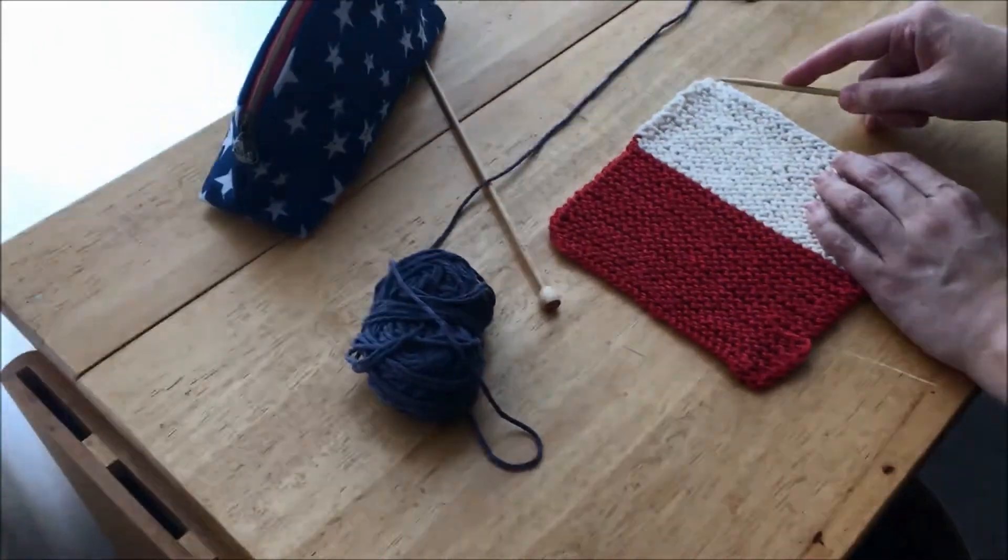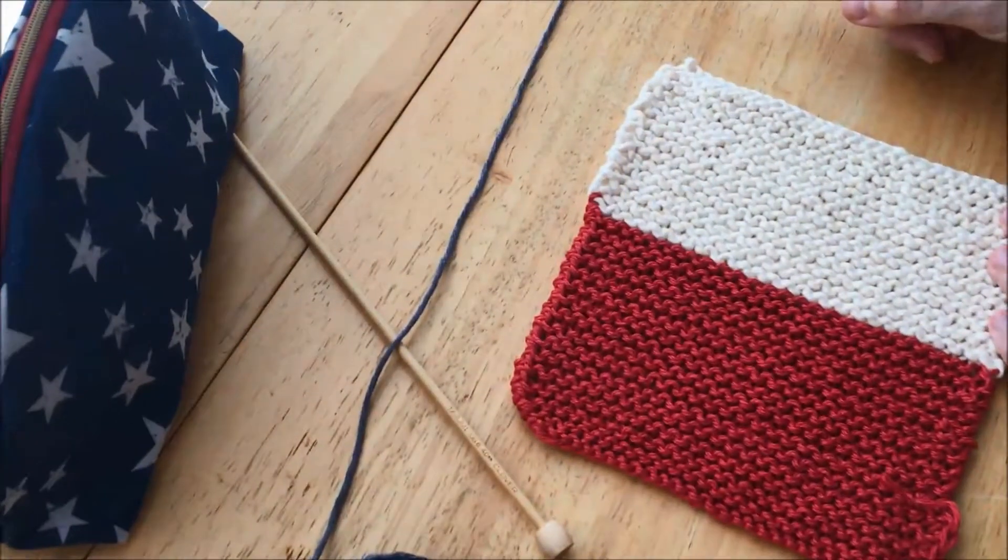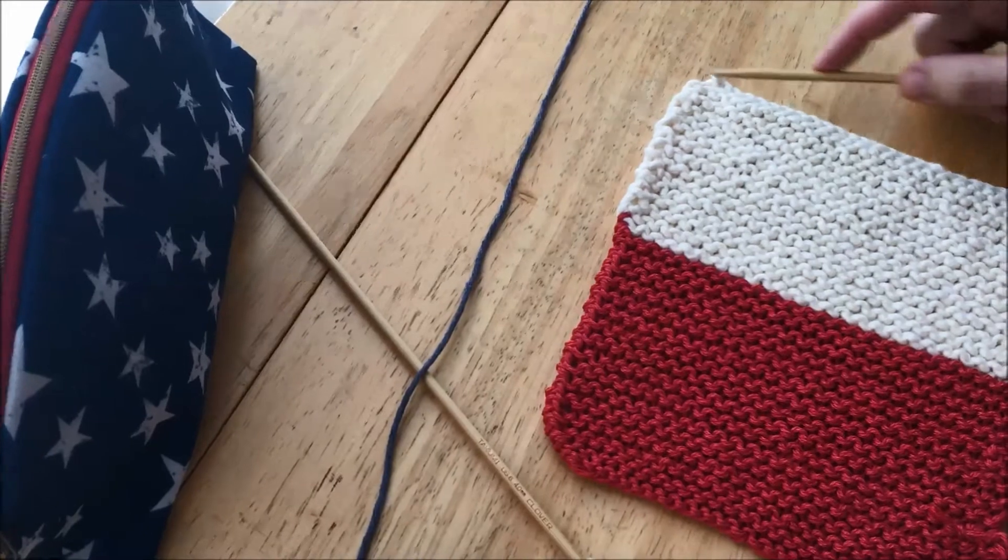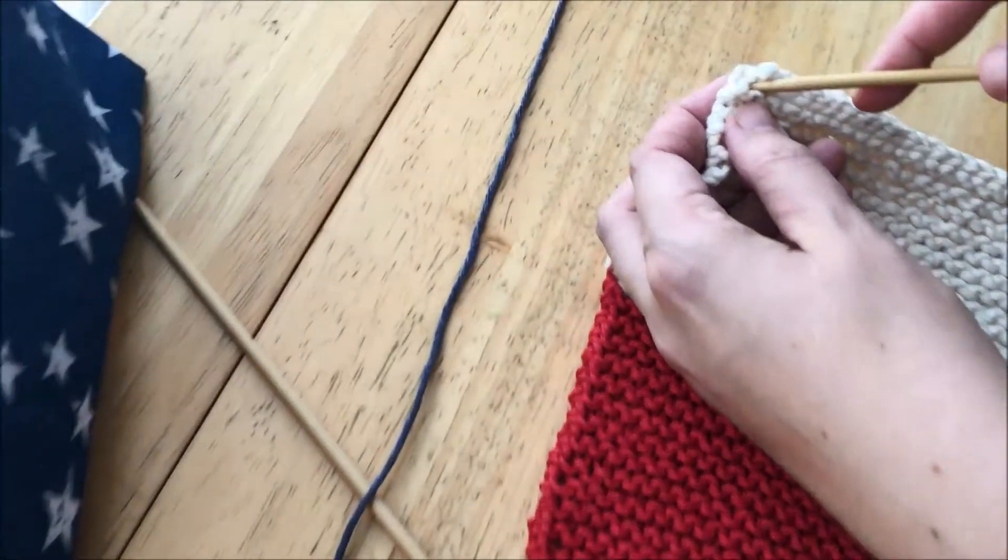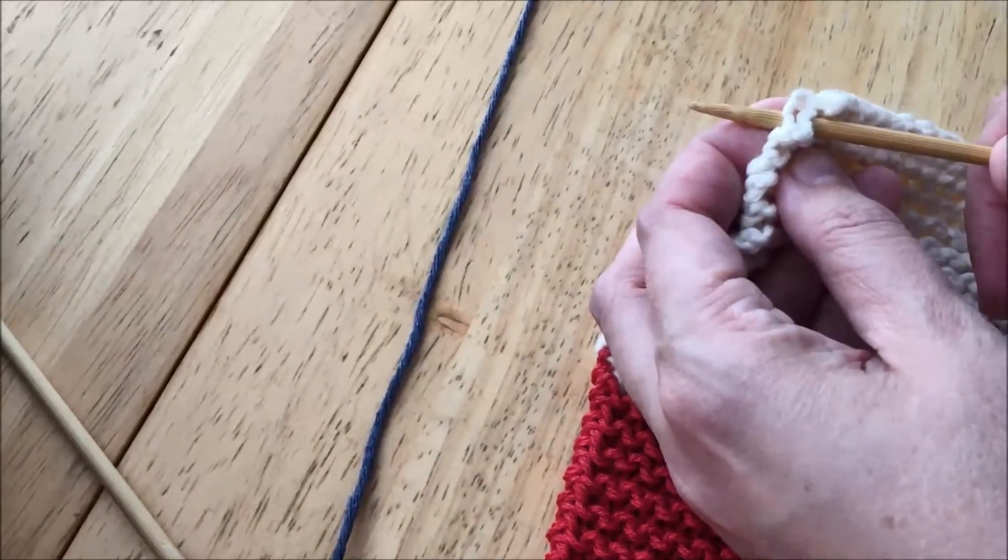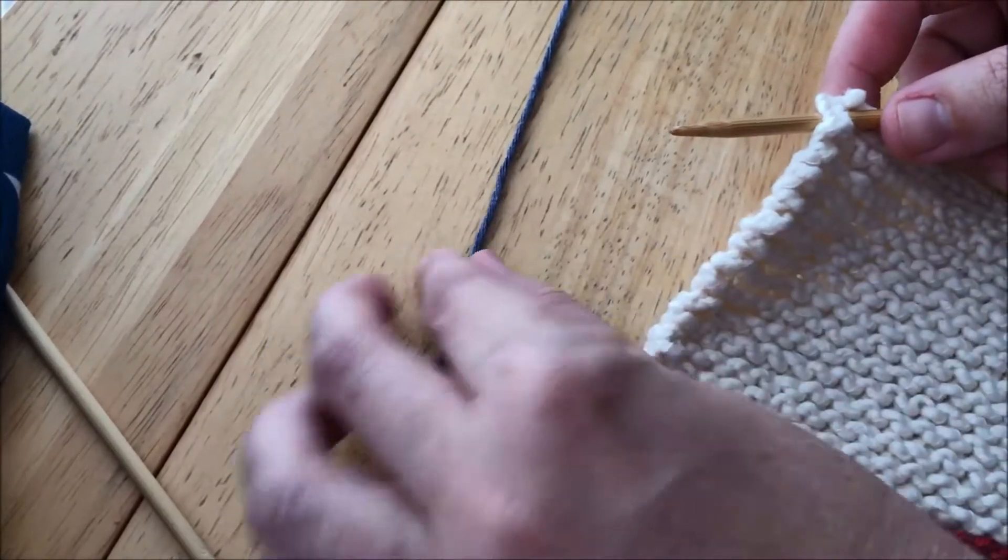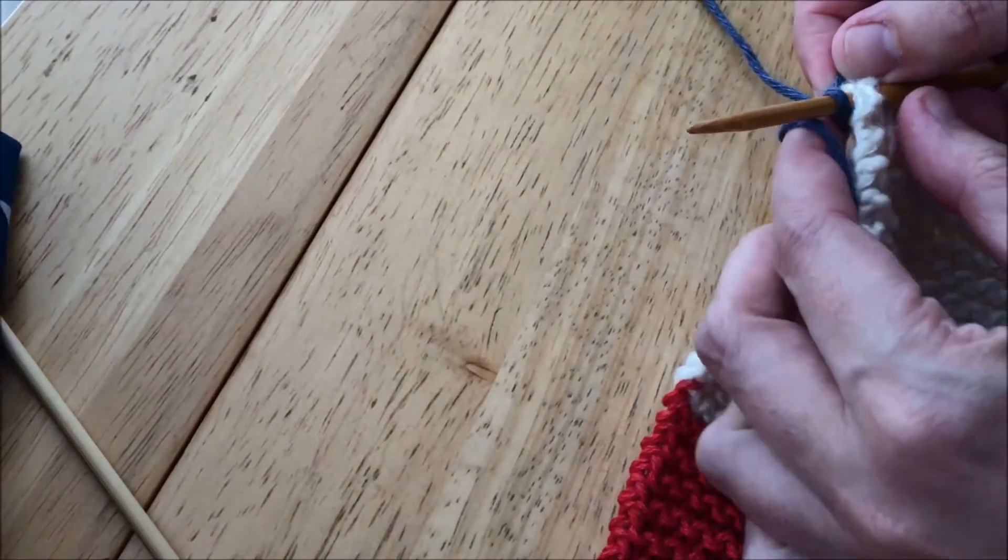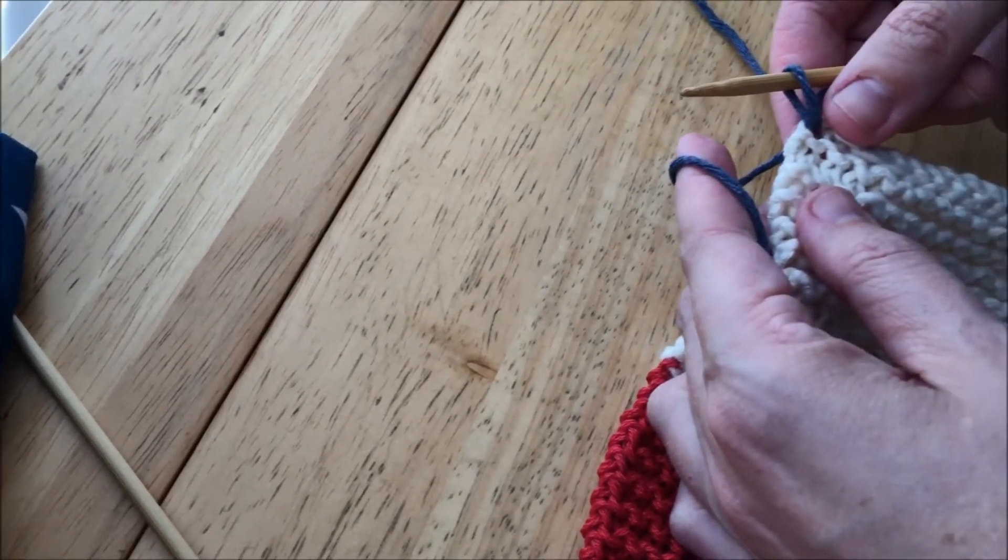See how you have these ridges here? We're going to start between this bound-off row and the first ridge, right in there. You put your needle underneath - it's like a V, but there are two bars here. Then you pick up the blue, wind it around the needle once, and bring it forward. There's one.